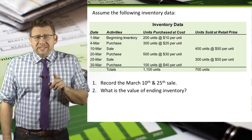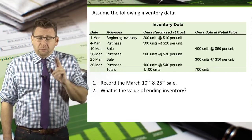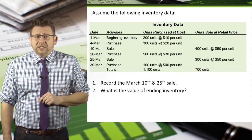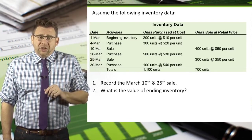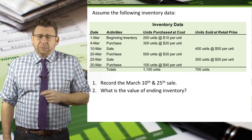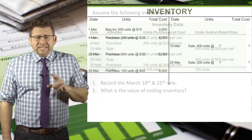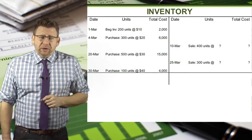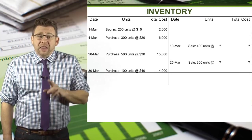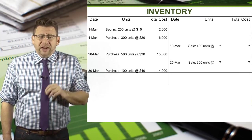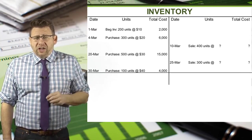With this data and using moving average, let's record the March 10th and March 25th sales, as well as determine the ending inventory value, assuming this is a perpetual inventory tracker. Since this company uses the perpetual method of tracking inventory, the dates of the transactions matter, so we need to list them in chronological order.